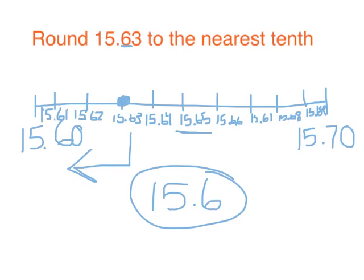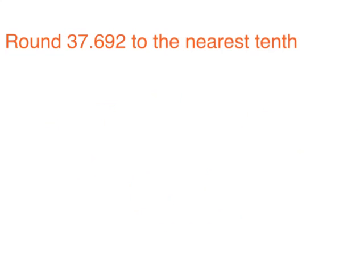So when I round 15 and 63 hundredths to the nearest tenth, I get 15 and 6 tenths. Let's look at another example. Round 37 and 6 hundredths to the nearest tenth. There is a 6 in the tenths place. That can help me see that this number falls between 37 and 6 tenths and 37 and 7 tenths on the number line.